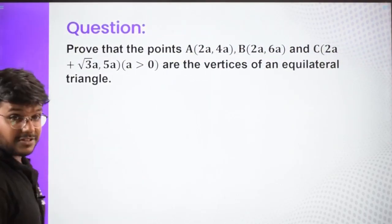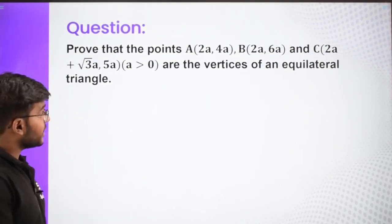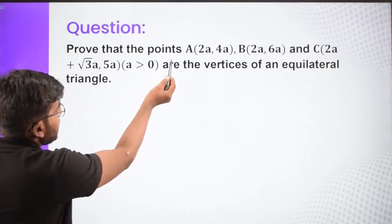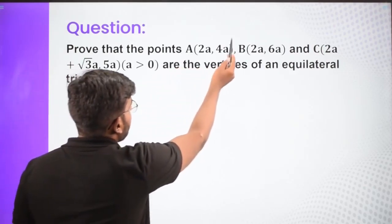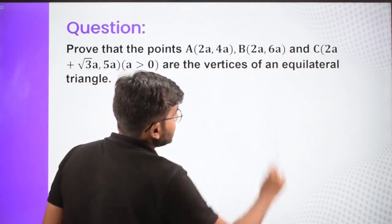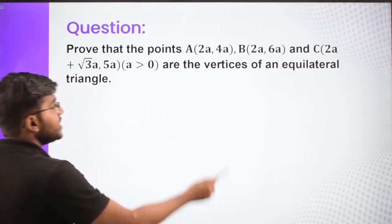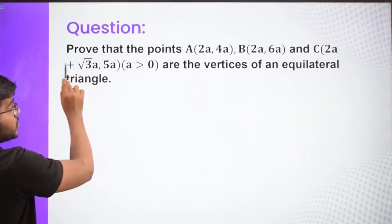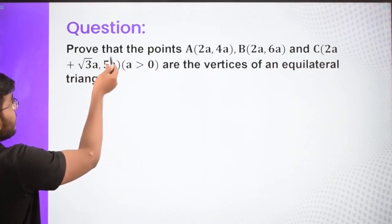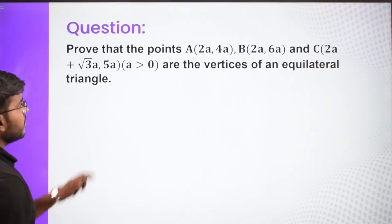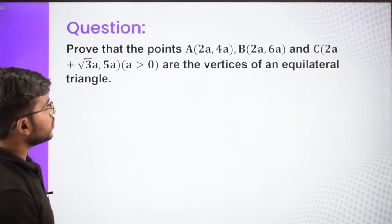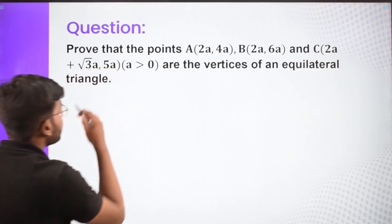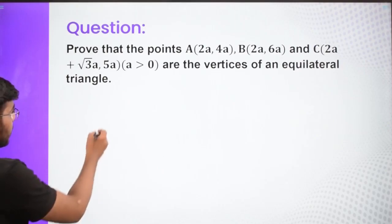Now let's see some questions. The first question is a proof question: prove that the points A(2a, 4a), B(2a, 6a), and C(2a + √3·a, 5a), where a is positive, are the vertices of an equilateral triangle.